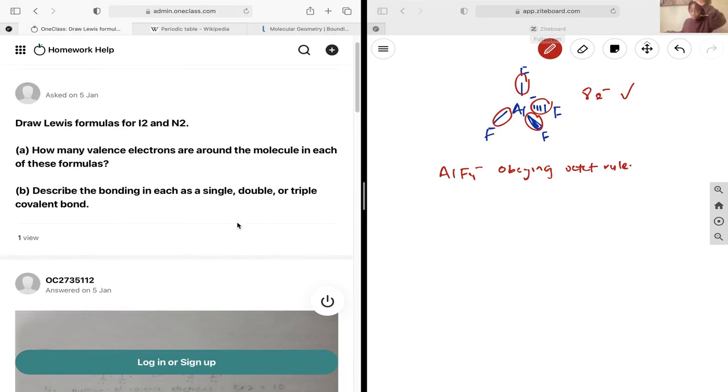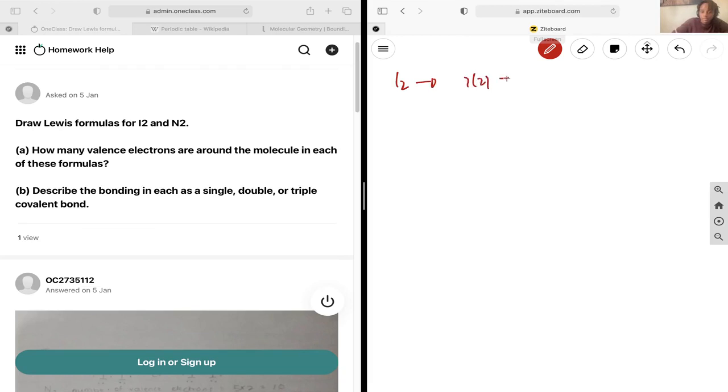Okay, next step I would like to draw the Lewis structures for I2 and N2. So let's start with I2. That should have 7 by 2, so 14 electrons. We already know halogens like to make one bond, so let's start with just the one bond around each and let's see if all of our valence electrons are satisfied.